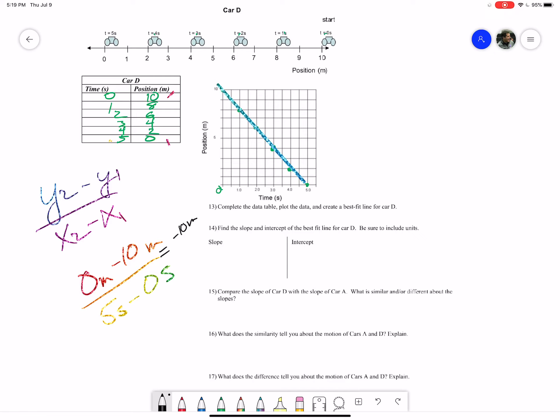We subtract it out. We have zero minus 10, which is negative 10 meters, and five minus zero is five seconds. We do our math, we divide that out, and we get a slope that's going to be negative two meters per second.